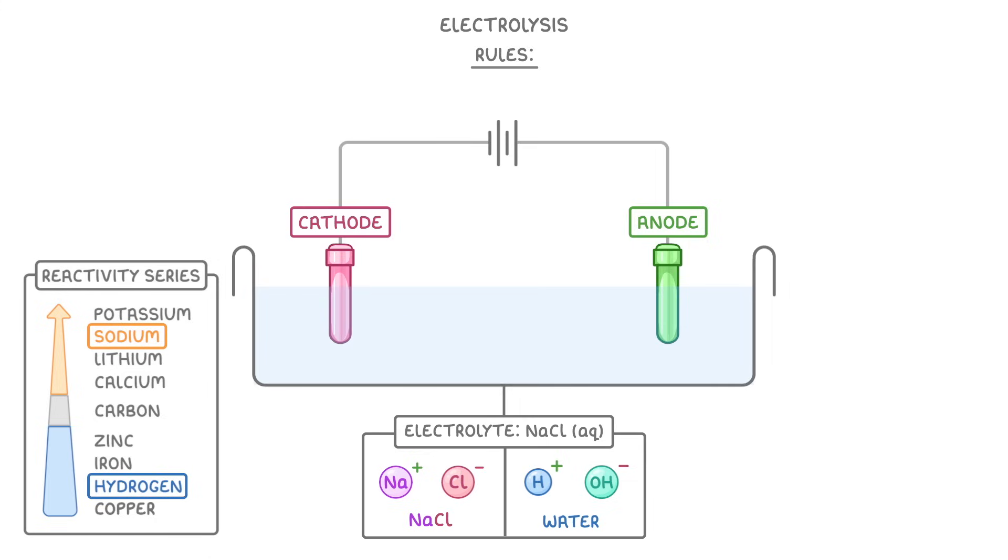Meanwhile, at the anode, we have to pick between chloride and hydroxide ions. And because chloride is a halide, that will be the one that gets discharged. So we'll lose electrons and form chlorine gas.